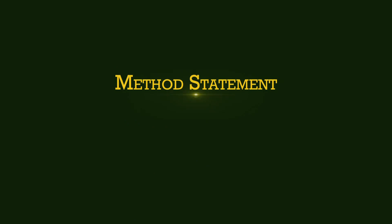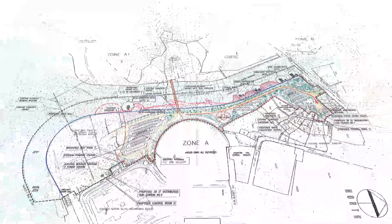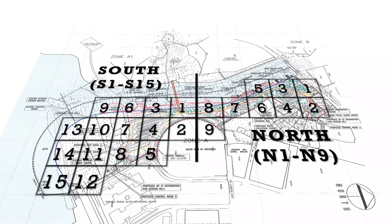The project area is divided into two main areas, North and South, which are further subdivided into 9 and 15 areas respectively.